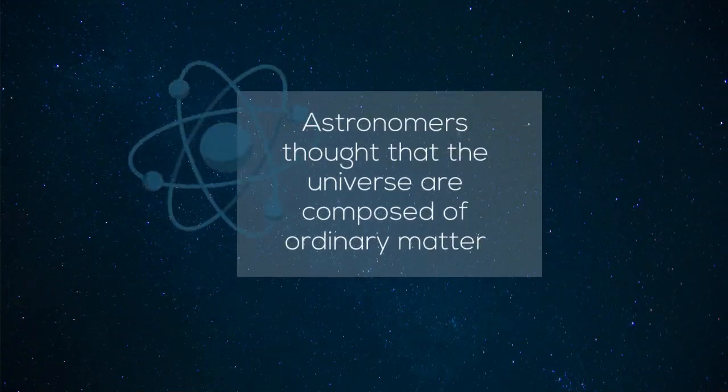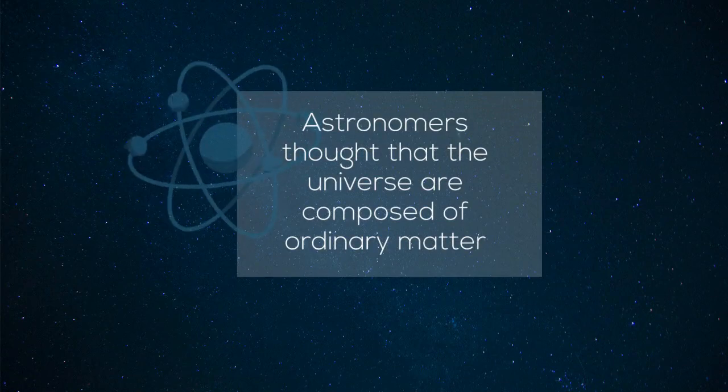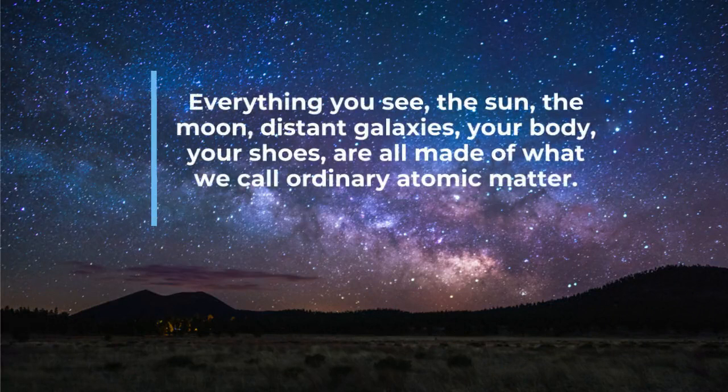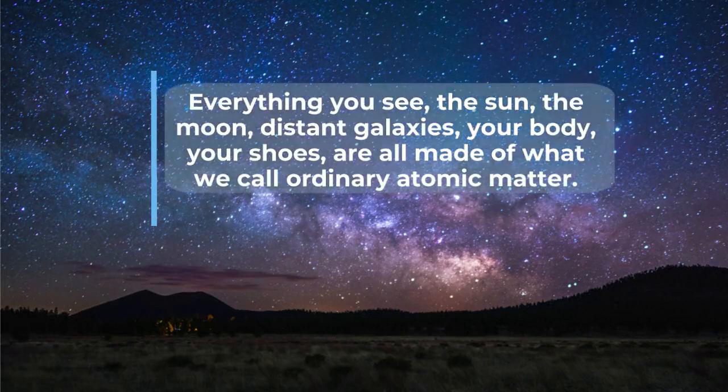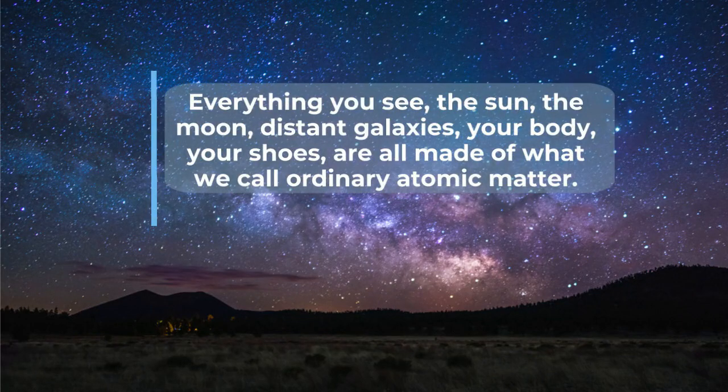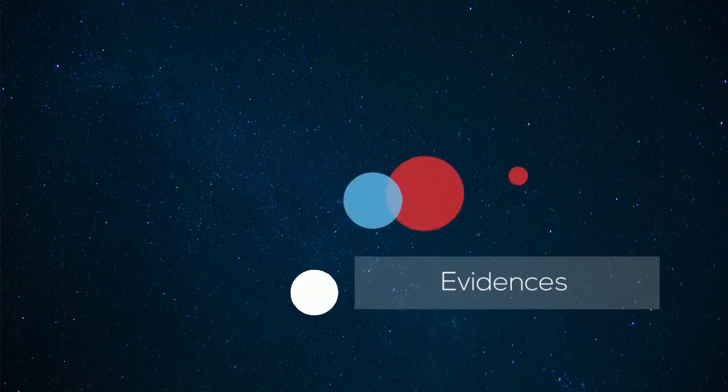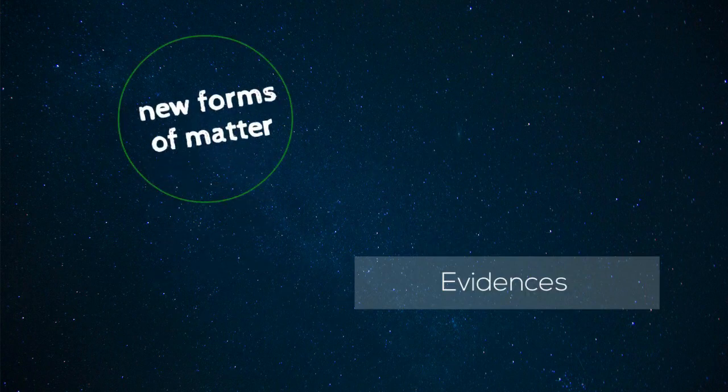The astronomers thought that the universe are composed of ordinary matter. Everything you see, like the sun, the moon, the distant galaxies, even your body and your shoes, are all made of what we call ordinary atomic matter. However, in the past few decades, there has been ever more evidences that suggest there is something on universe that we cannot see. Perhaps, new forms of matter.